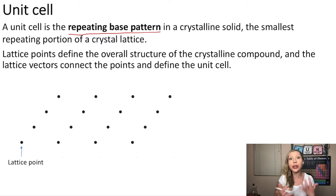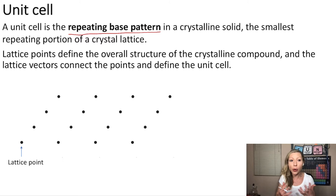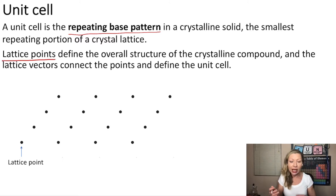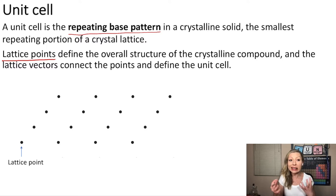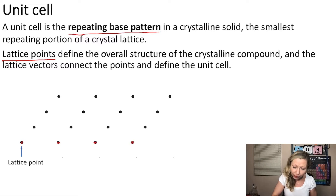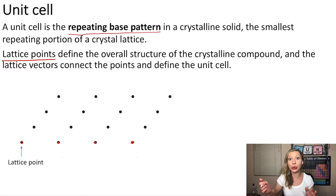Now how do you figure out what is the shape of a unit cell? Unit cells are composed of so-called lattice points which define the overall structure of the crystalline compound. And these lattice points, as shown here in two dimensions, are going to be connected by so-called lattice vectors and define the unit cell.